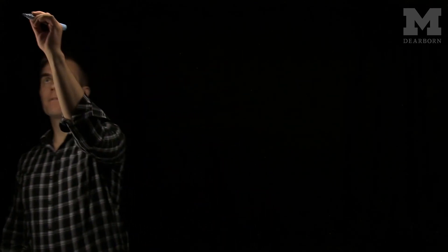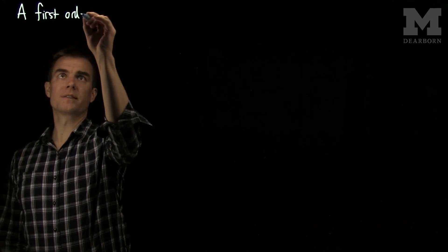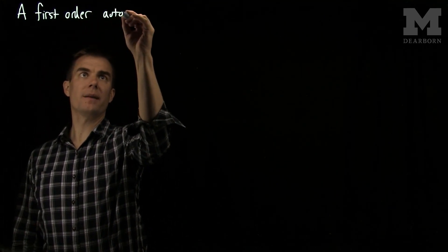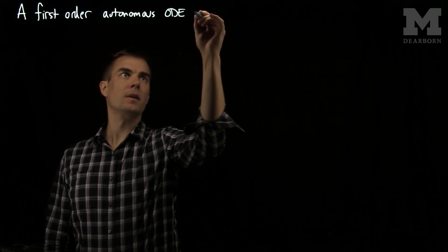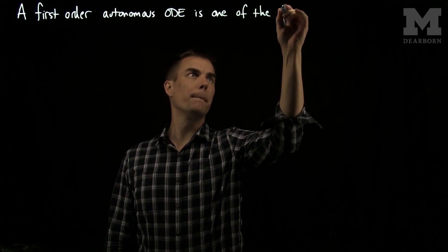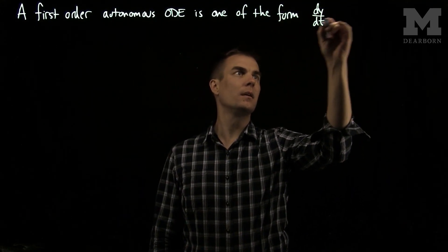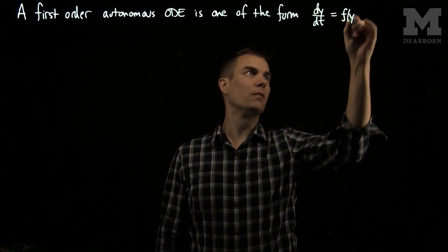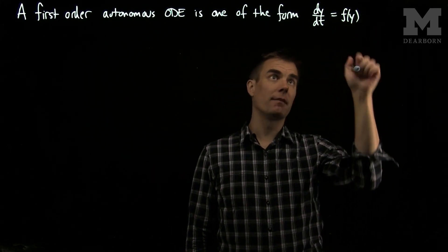A first-order autonomous, or time-independent, ODE is one of the form dy/dt = f(y), where there's no time dependence in the function f.